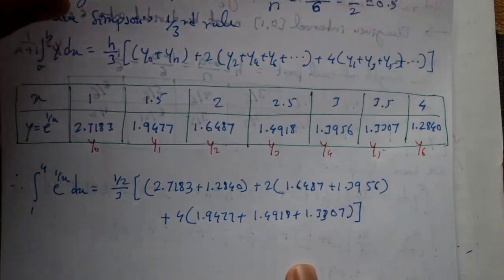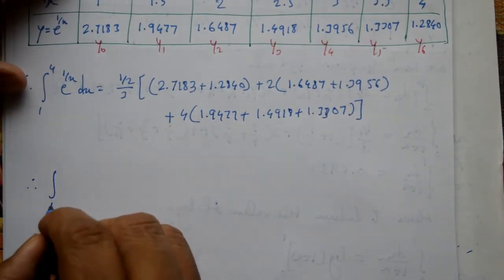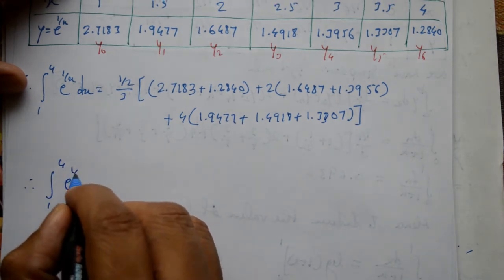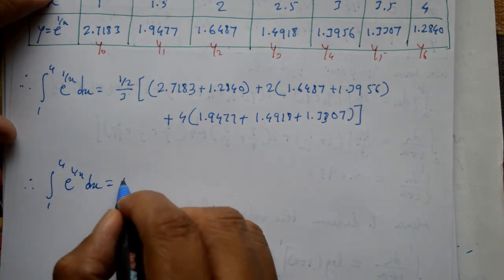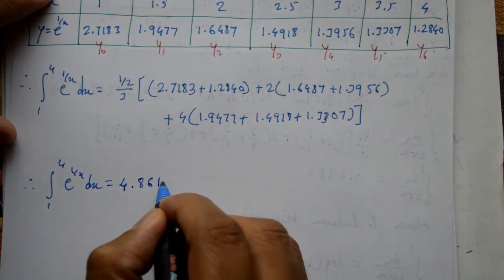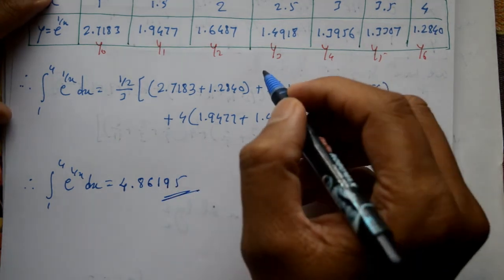Now using calculator, calculator use karke solve kiya to, therefore integration of 1 to 4 e to the power 1 by x dx is equal to, yetho bhoot hi simple hai, value ko substitute karna hai, direct aapko answer mil jae ga, 4.86195 aaye ga. So this is required values.